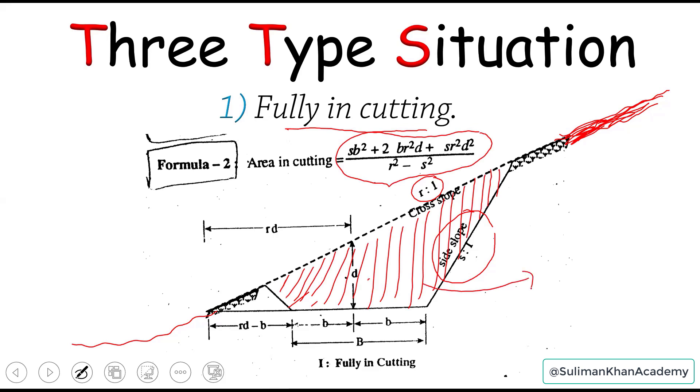Now once we have this area, then we multiply this area with the length or the chainage or the rd. And we can have the earthwork or the volume. So this is the basic concept for fully in cutting.